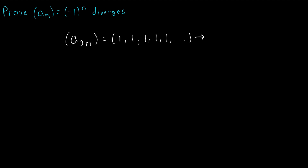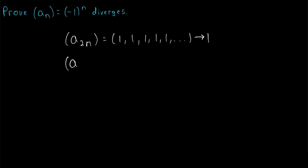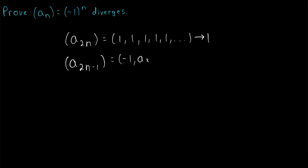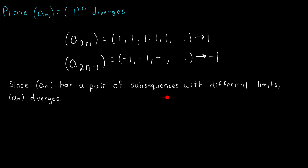It's a constant sequence of positive 1s, and a constant sequence converges to its constant value. So this subsequence converges to 1. However, consider the subsequence of odd terms a_{2n-1}. Plugging in 1 gives a_1, which is negative 1 to the power of 1, which is negative 1. The second term is a_3, negative 1 to the power of 3, which is also negative 1. We keep having odd powers of negative 1, which are always negative 1. So this is a constant sequence of negative 1s, and it converges to negative 1. Since our sequence has a pair of subsequences with different limits, we know the sequence diverges.